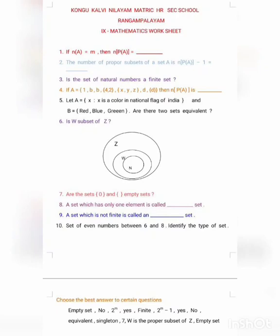Let A equal to set of x such that x is a color in national flag of India, and B equal to set of red, blue, green. Are there two sets equivalent? Look at that. Once again, let A equal to set of x such that x is a color in national flag of India. Students,